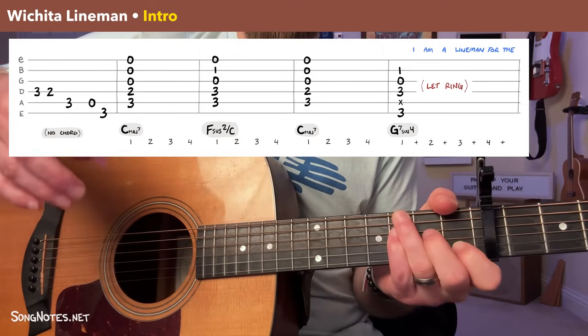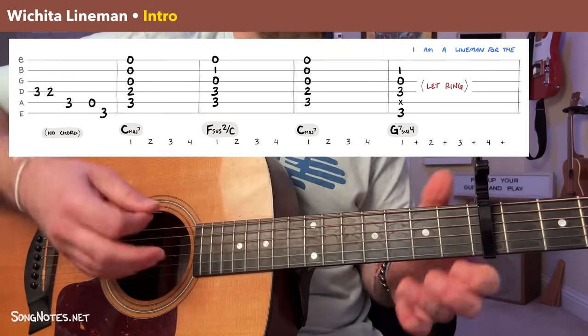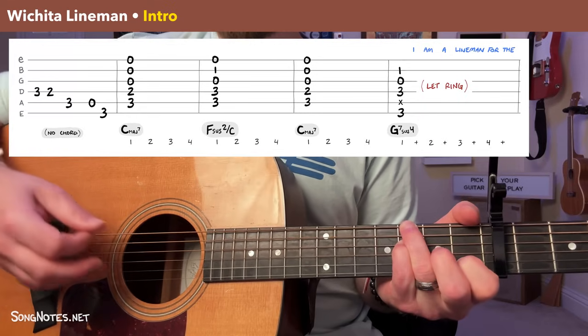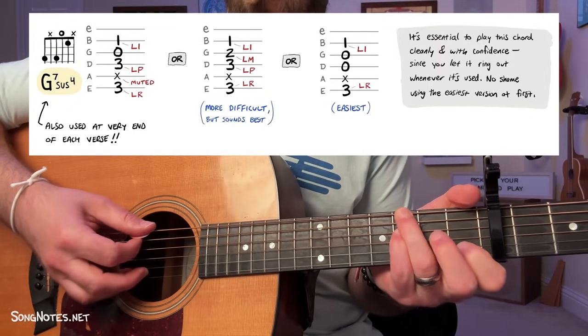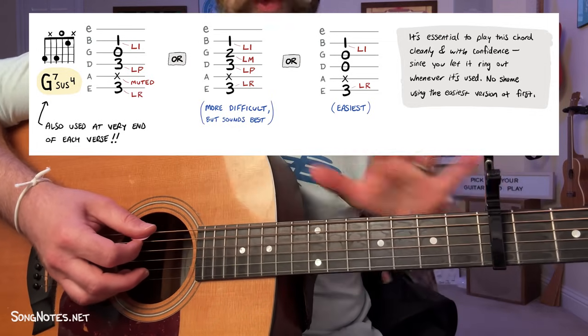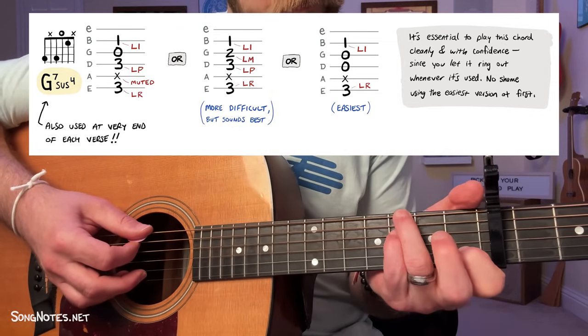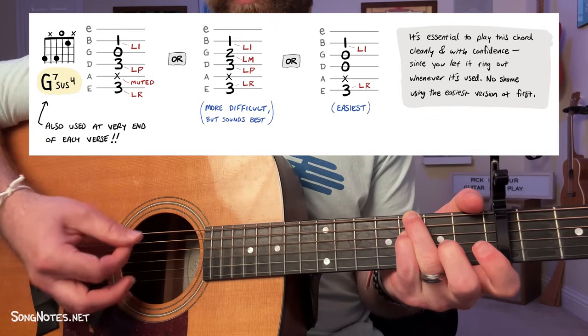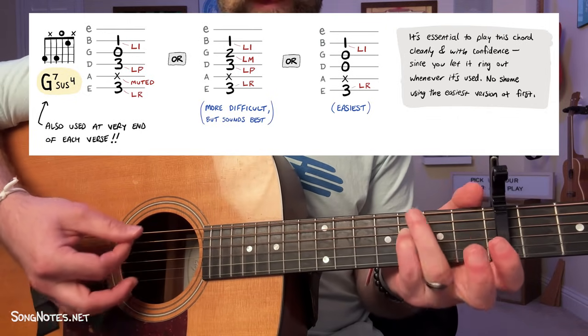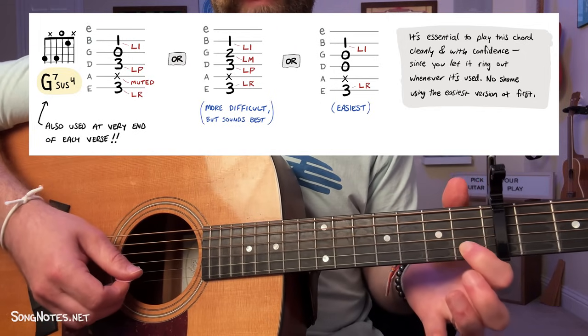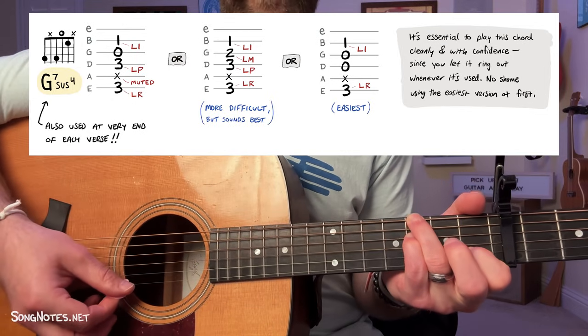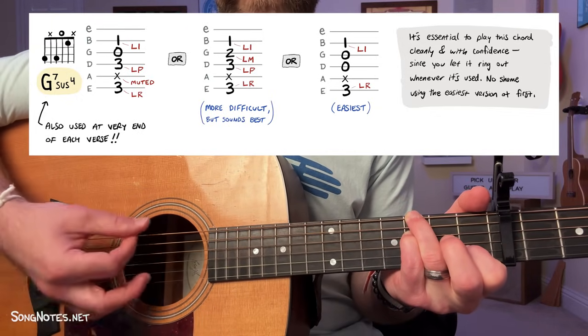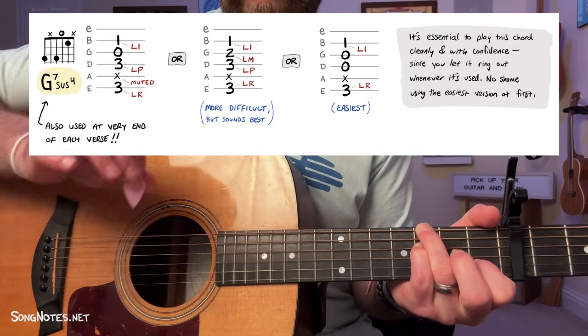Basically what I do is, coming from the C major seven, I just put my pinky down on the fourth string, third fret, and then I put my index finger down where it would normally go for a C chord. And what you're going to do is play the C major seven for one measure, one, two, three, four, then the F sus two over C, then back to the C major seven. And then this one. This is a G seven sus four. Now this is a weird one. I'm going to give you a few different options for this one. And we're going to let this chord ring, meaning we're just going to play it one time.